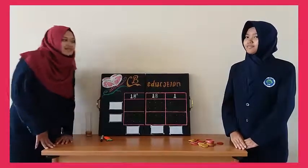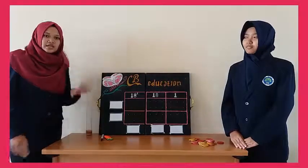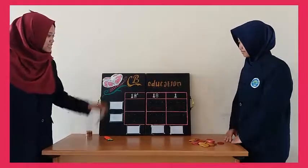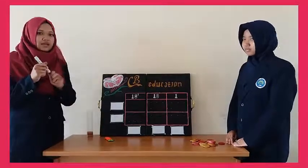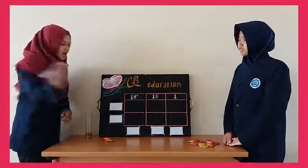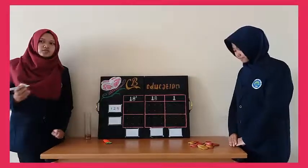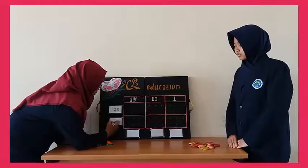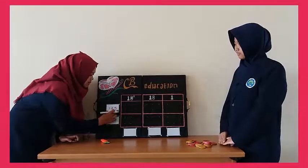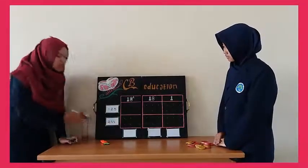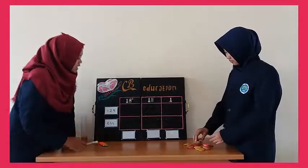Di sini yang pertama kami akan menjelaskan tentang operasi penjumlahan bilangan cacah. Kita memiliki angka di sini. Sebelumnya kita menuliskan di sini angka yang akan kita jumlahkan. Seumpama kita memiliki angka 125, lalu kita jumlahkan dengan 211.